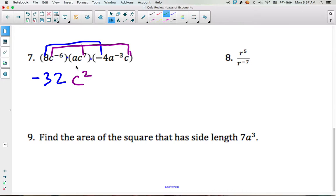Then we have a. That would be a to the first times a to the negative 3. And you keep the same base. 1 plus negative 3 gives us negative 2.